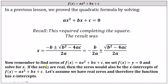To find the zeros of f(x) = ax² + bx + c, we set f(x) or y equal to zero and solve for x. If the zeros are real, then they are also the x-intercepts of the quadratic function. Let's assume we have real zeros, and therefore the quadratic function has x-intercepts.